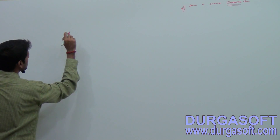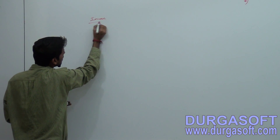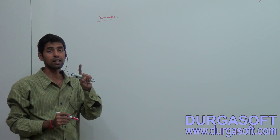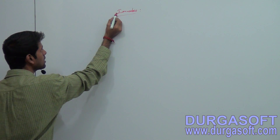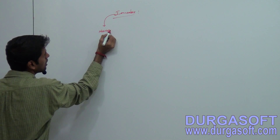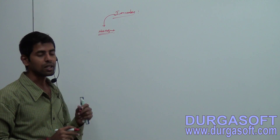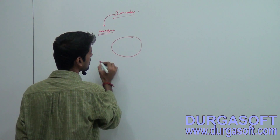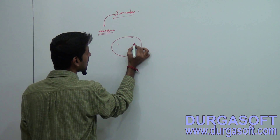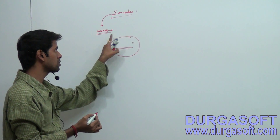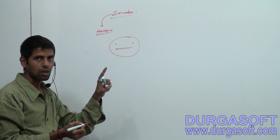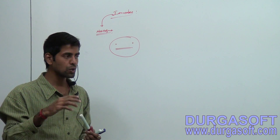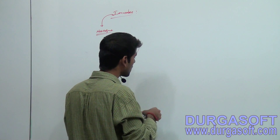First, what is this immutable? Immutable terminology means not adjusting - it represents not adjusting. If there is any object and that object is having any content or data, that object is immutable if it does not adjust.